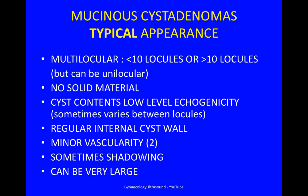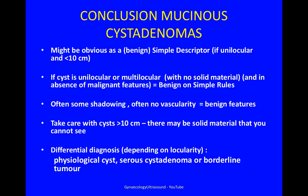In summary, the typical appearance of a mucinous cyst adenoma is multilocular with fewer or more than 10 locules, but it can be unilocular. No solid material. The cyst contents typically have low level echogenicity, which sometimes varies between locules. The internal cyst wall is usually regular. Minor vascularity giving a score of 2, and sometimes some shadowing. These cysts can be very large. When you see such a lesion, it may be obvious as a benign simple descriptor if the mass is unilocular and less than 10 centimetres. If it's unilocular or multilocular with no solid material and in the absence of malignant features, it will be benign on simple rules. Often there is some shadowing and no vascularity — these are benign features. Take care with cysts larger than 10 centimetres, because there may be solid material that you cannot see.